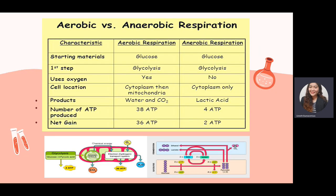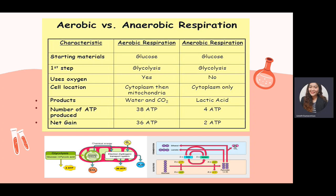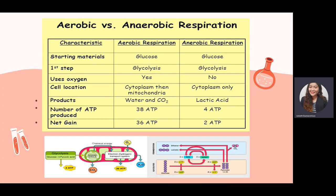Let's differentiate aerobic and anaerobic respiration. The main difference is that aerobic uses oxygen while anaerobic does not. To run aerobic respiration, oxygen is needed; anaerobic does not require it. The first step for both is glycolysis — the process of breaking down glucose. Aerobic respiration uses oxygen, while in anaerobic respiration, glucose is broken down without oxygen.